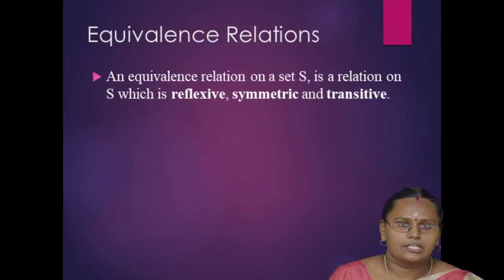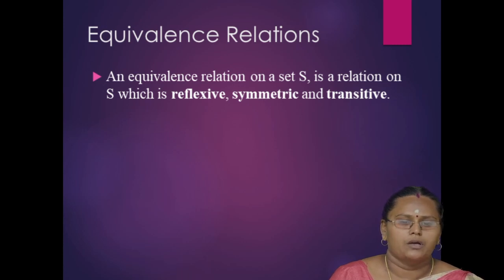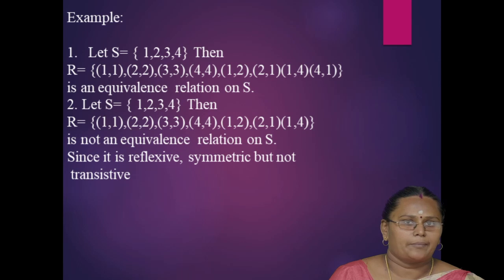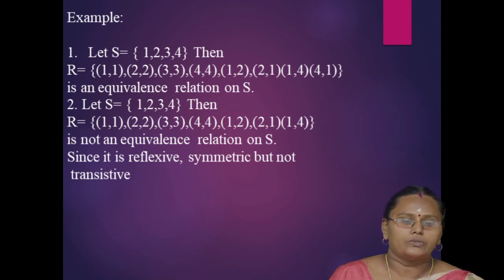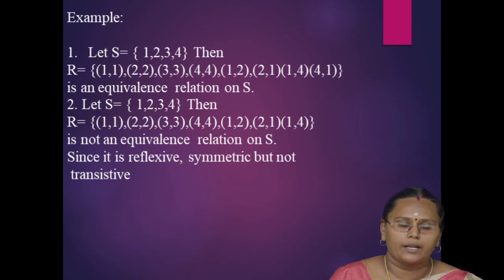Next, equivalence relations. An equivalence relation on a set S is a relation on S which is reflexive, symmetric, and transitive. For example, let S = {1, 2, 3, 4}. Then R = {(1,1), (2,2), (3,3), (4,4), (1,2), (2,1), (1,4), (4,1)} is an equivalence relation on S.